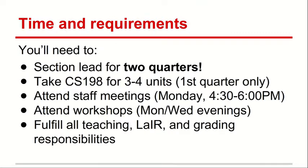In terms of time and requirements, the section leading requirements are that you have to section lead for at least two quarters, and you will take CS198 your first quarter for three to four units. You will attend staff meetings, which happen on Mondays from 4:30 to 6 p.m., and workshops on Monday and Wednesday evenings for the first four weeks of your first quarter. You'll fulfill all teaching and grading responsibilities — it's about 15 hours per week for the first quarter when you're starting out.